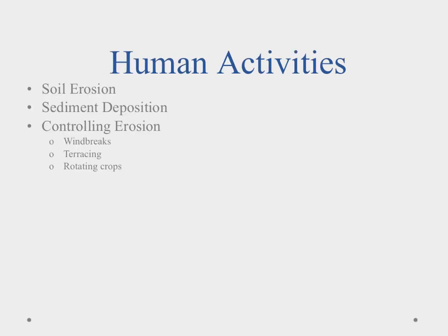Humans play a major role in soil erosion. We've developed some poor practices — cutting down forests so that when rains come, with no roots to hold the soil, it transports away. This leads to sediment deposition in rivers. Ways to control erosion include windbreaks — primarily fast-growing pine trees — placed to stop wind erosion by knocking down wind speed close to the ground so it can't blow away dirt.